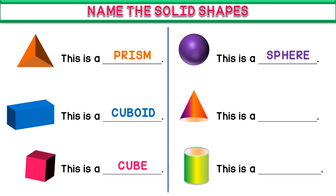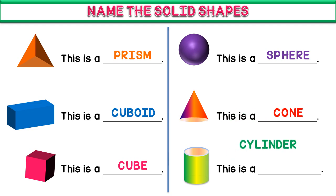And the fifth one is cone — this is a cone. And the last one is a cylinder — this is a cylinder. Thank you.